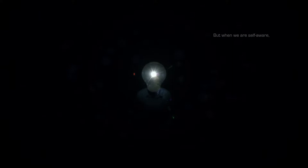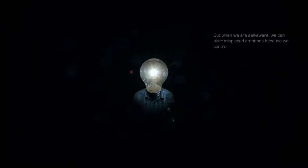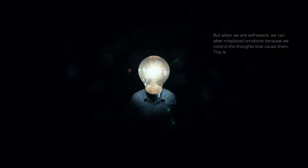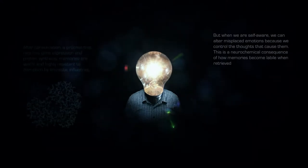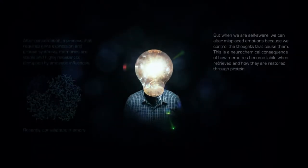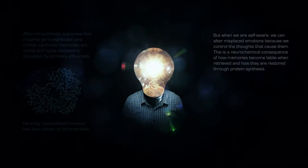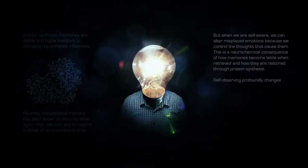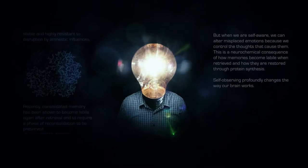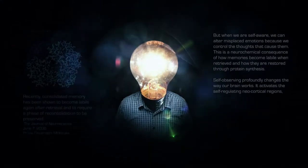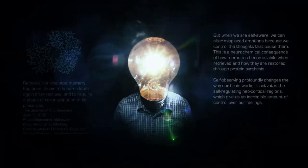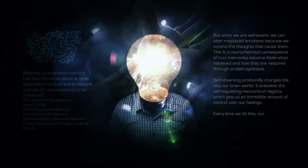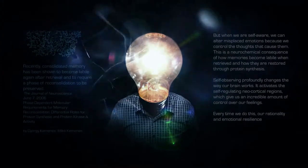But when we are self-aware, we can alter misplaced emotions because we control the thoughts that cause them. Self-observing is a neurochemical consequence of how memories become labeled when retrieved and how they are restored through protein synthesis. Self-observing profoundly changes the way our brain works. It activates the self-regulating neocortical regions which give us an incredible amount of control over our feelings. Every time we do this, our rationality and emotional resilience are strengthened.